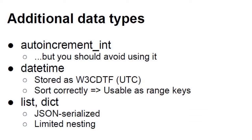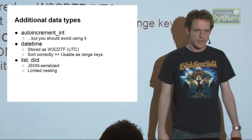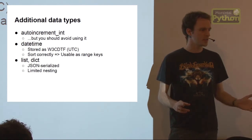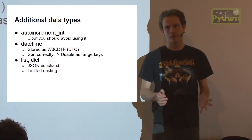We also added support for datetime objects, stored as W3CDTF strings (year, month, day, hours, minutes, seconds, UTC). Since this format sorts correctly as a string, datetimes can be used as range keys. We also added support for lists and dicts through JSON serialization — they appear as strings in the database but are retrieved as actual Python lists and dicts. You just can't run specific filters on them. Some nesting is also supported.